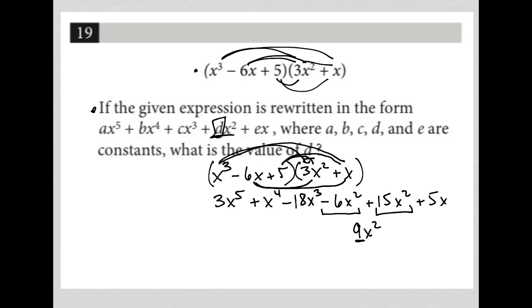And therefore, d must be 9, right? So d, the coefficient in front of the x squared term, is 9. Hopefully, that makes sense as to why I don't care about anything else on here because I'm only looking for d, right? Only looking for that coefficient in front of x squared.